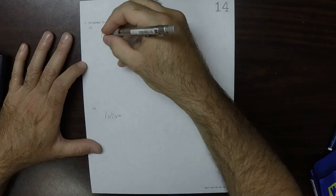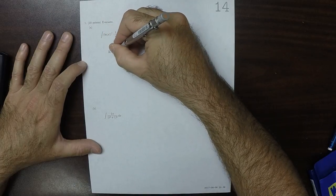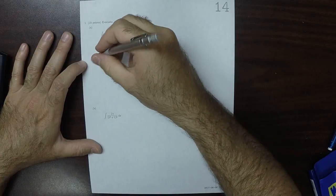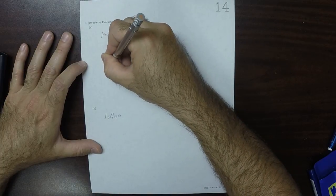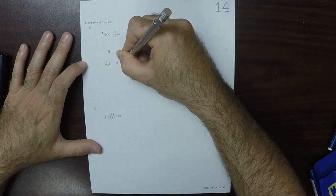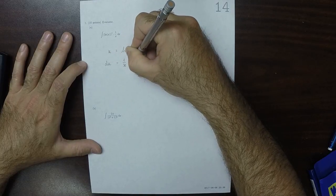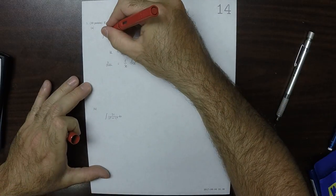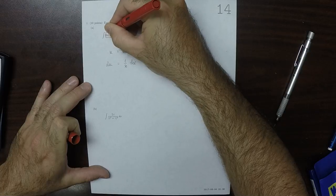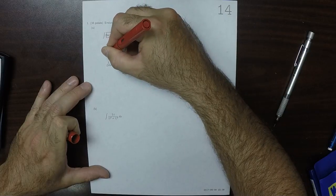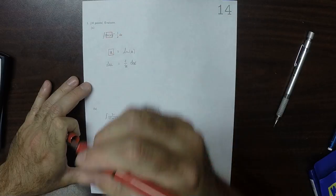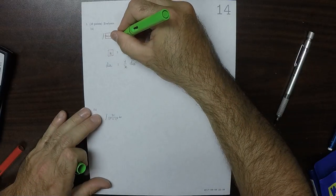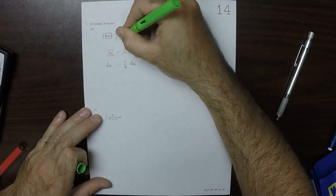So specifically, we could say that u is the log of x, and then as a result, du is 1 over x dx. And what I want you to observe is that means we can cover all of the x variables, those ones, with u, and we can cover all of the other items, 1 over x dx, with du.